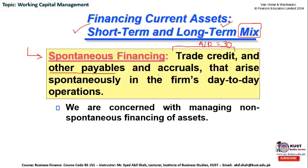Other payables and accruals may also be included in spontaneous financing. For example, the company may defer its tax payment for the next month or next few months. Accruals are expenses that have been incurred but not yet paid — like utility bills that are due but for which the company has a certain number of days to pay. The time period the company is allowed to pay its obligations is known as the lead time, during which the company can utilize its cash for other purposes. Such fund generation that automatically occurs is known as spontaneous financing, occurring in the firm's day-to-day operations.